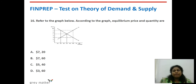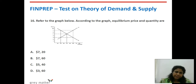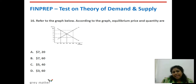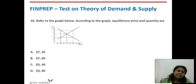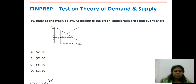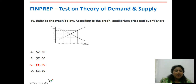Sixteenth question: refer to the graph below. According to the graph, equilibrium price and quantity are what? Equilibrium is where the demand and supply curves intersect. From the point of intersection, move toward the Y-axis to find the equilibrium price — we get price as 5. From the point of intersection, move downward to hit the X-axis — we get quantity demanded as 40. The combination is 5 and 40. Answer is option C.